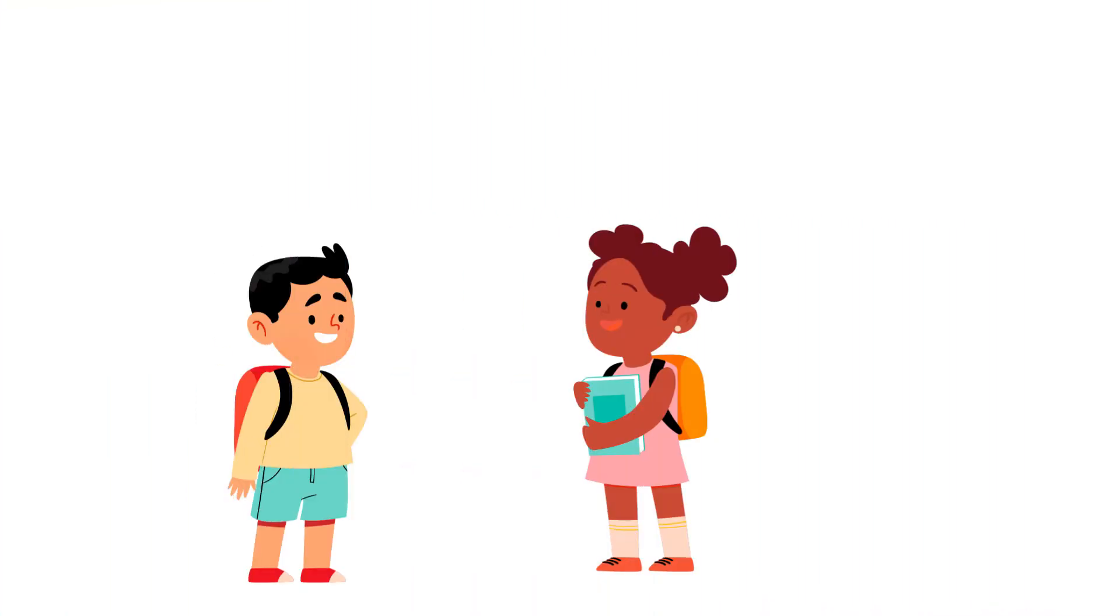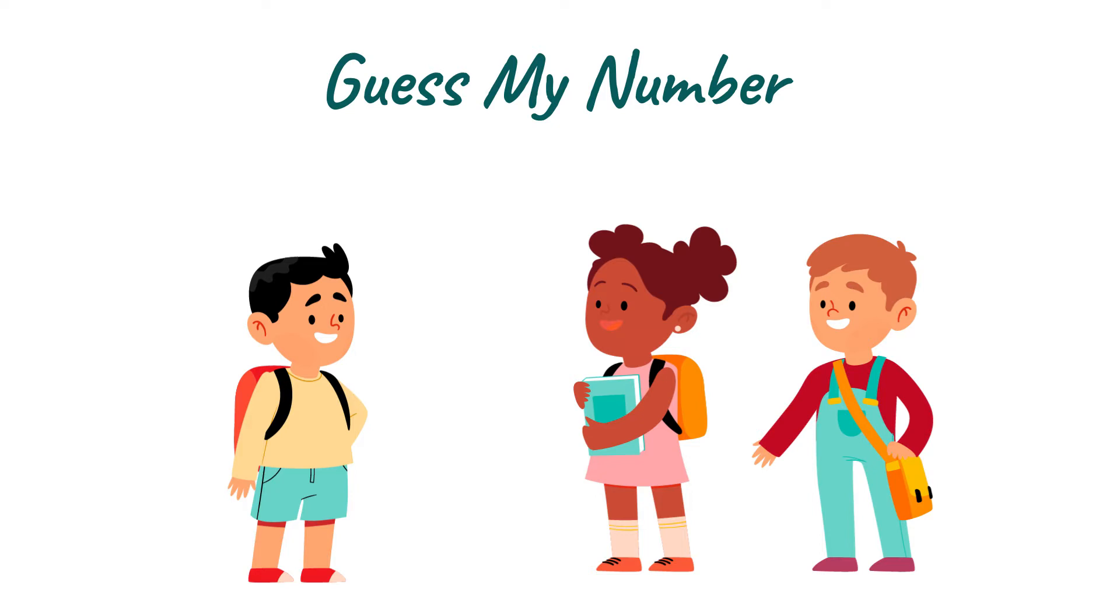There's a super fun game you can play with your friends and teacher to help you with this. It's called Guess My Number. The guy in the yellow shirt is thinking of a number. Let's call that number Y. He tells his friends that if he multiplies Y by 7 and then takes away 4, he gets 17. Can you work out what Y is?